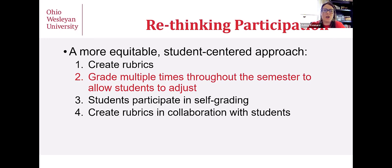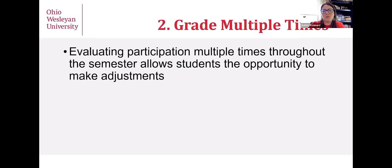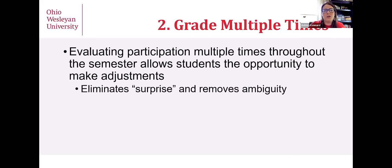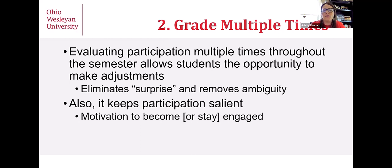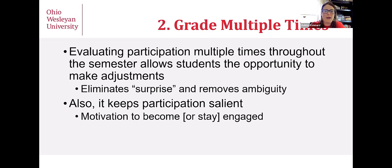The next thing is evaluating participation multiple times throughout the semester. When you evaluate it multiple times, you're really allowing students the opportunity to make adjustments. It eliminates the end-of-semester surprise, because you're giving feedback as the semester goes along, and it removes any ambiguity. It keeps their participation salient — if we're evaluating it multiple times, students are going to continue to think more about it and perhaps be more motivated to become or stay engaged. It also allows students to ask questions and get direct, immediate clarification on anything they might not understand.